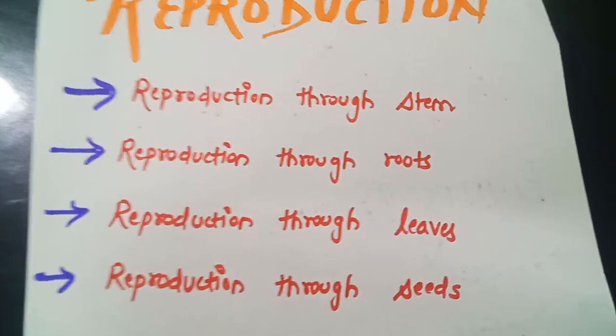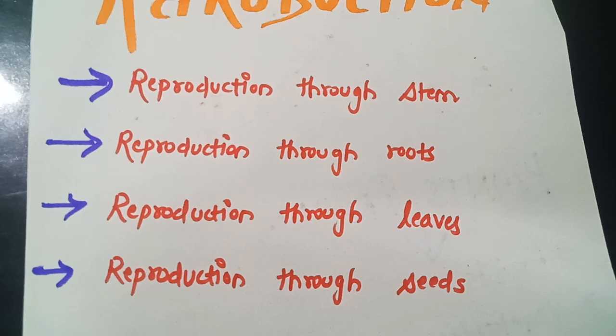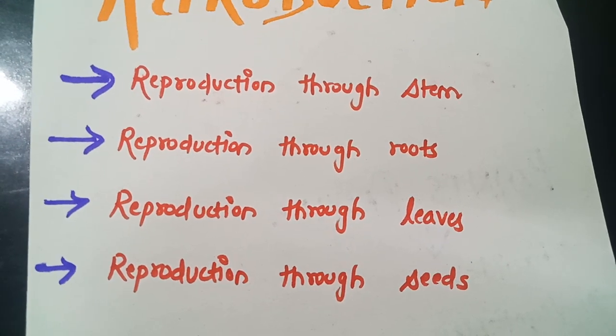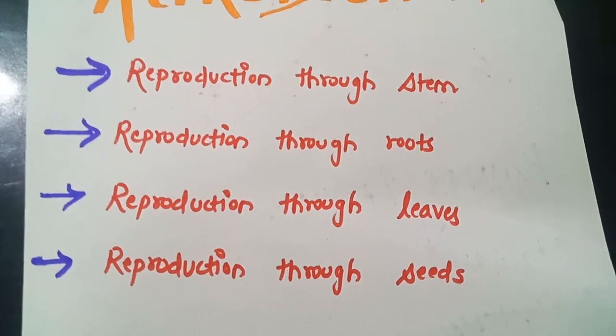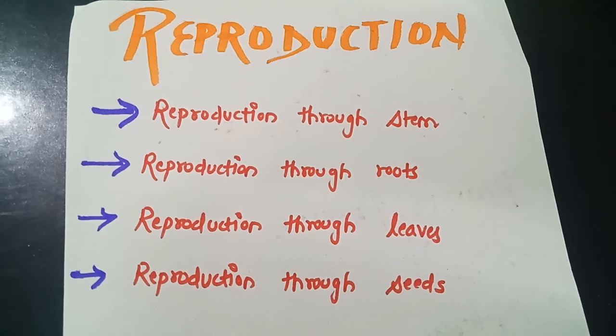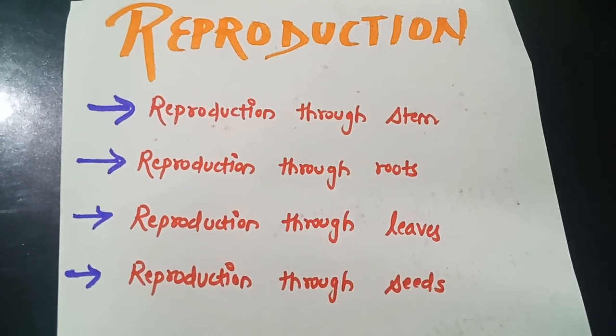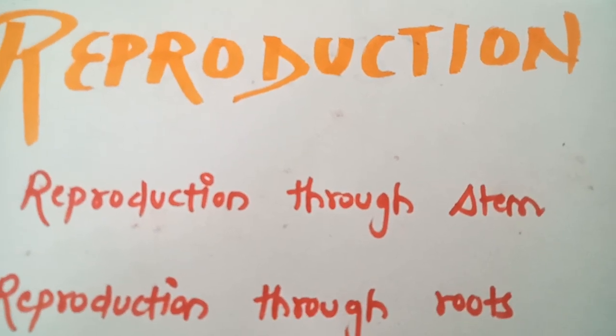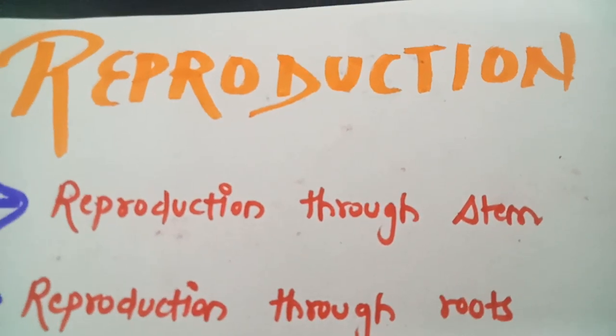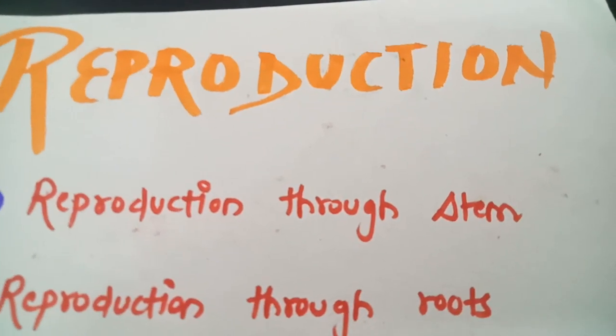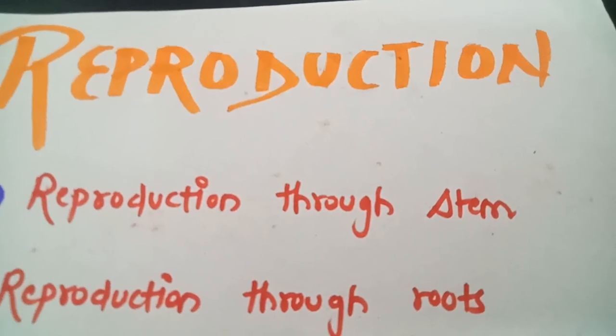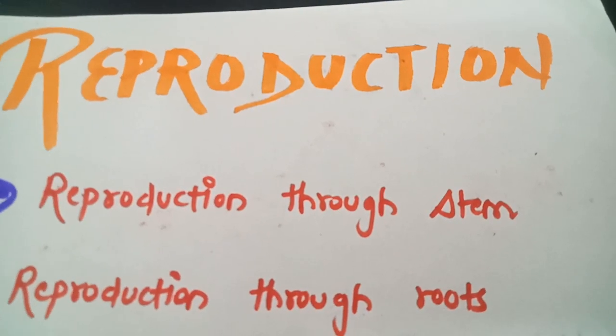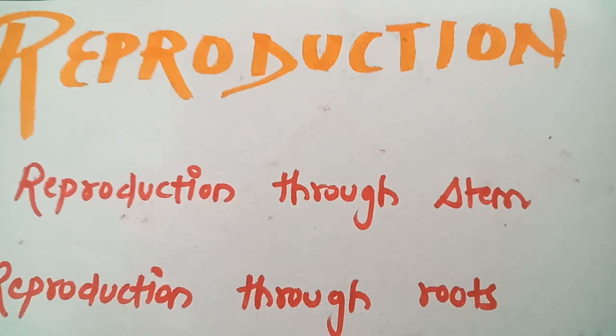Reproduction through stem, reproduction through roots, reproduction through leaves and reproduction through seeds. We are having four different kinds of reproduction in this chapter 1. When plants reproduce with the help of their stem is known as reproduction through stem. Basically stem is very important factor in this kind of reproduction.